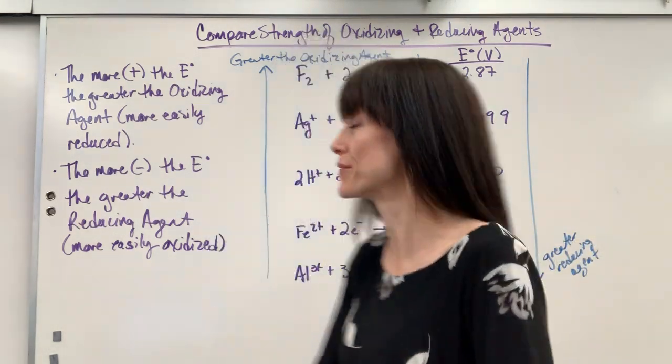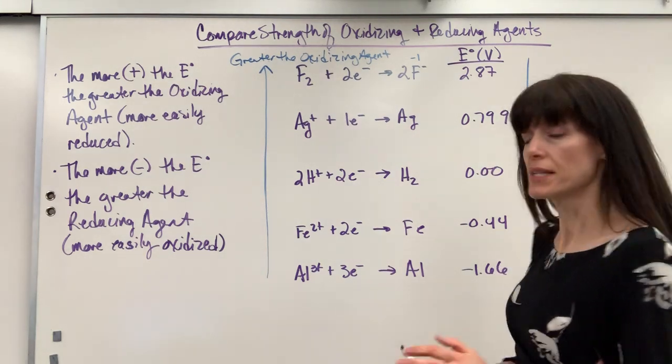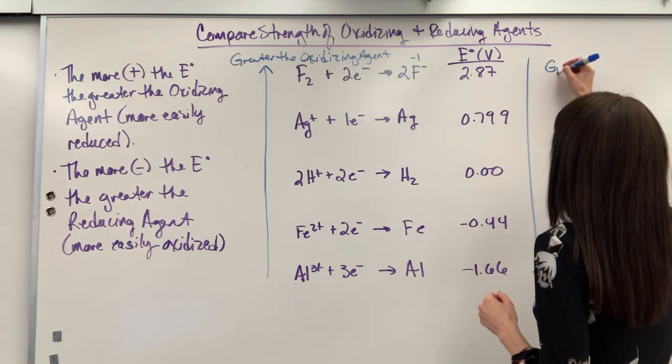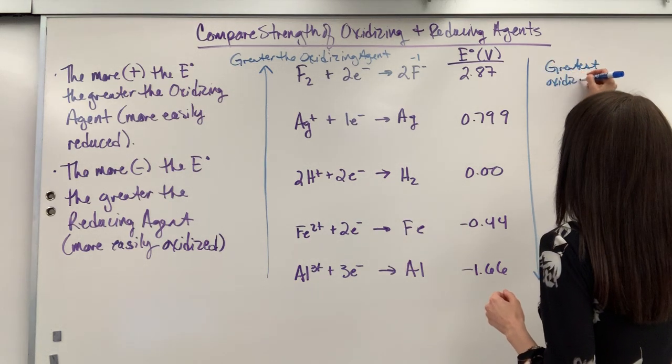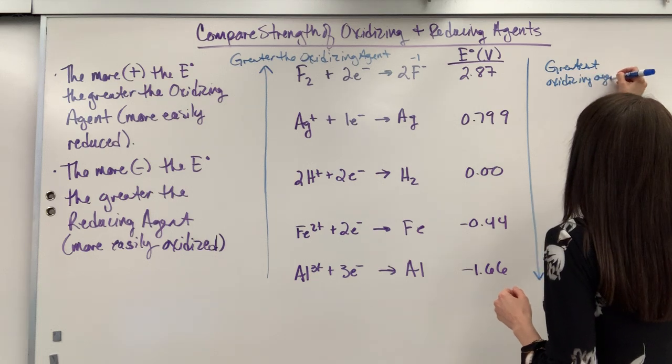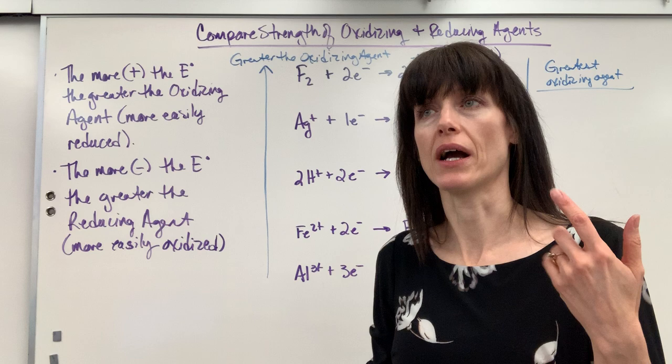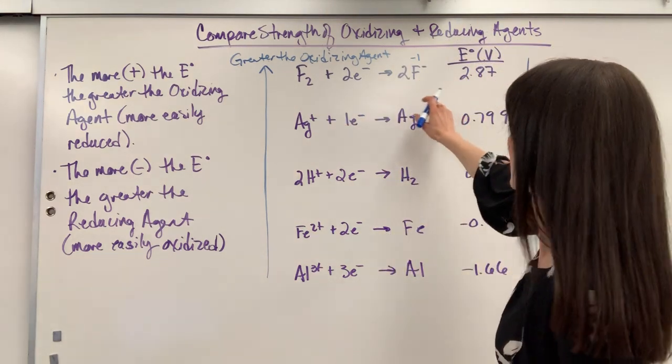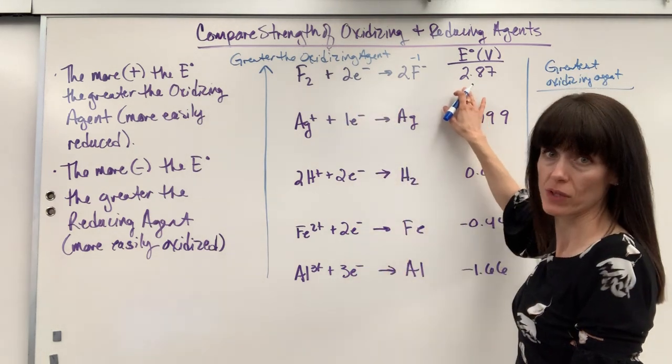So, with those two pieces of information, let's compare a couple of these. Let's say that I want to know greatest oxidizing agent. So, oxidizing agent is what's reduced. So, whatever is reduced is going to be the largest E value, because these are all written as reduction, largest E value.